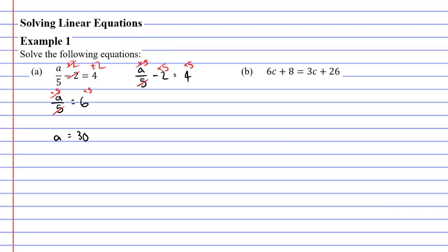The fives are going to cancel, leaving us with A. Two times five is 10 and four times five is 20. Now we're going to add 10 to both sides of the equal sign, which is going to cancel out the 10 next to the A. And A will be 20 plus 10,